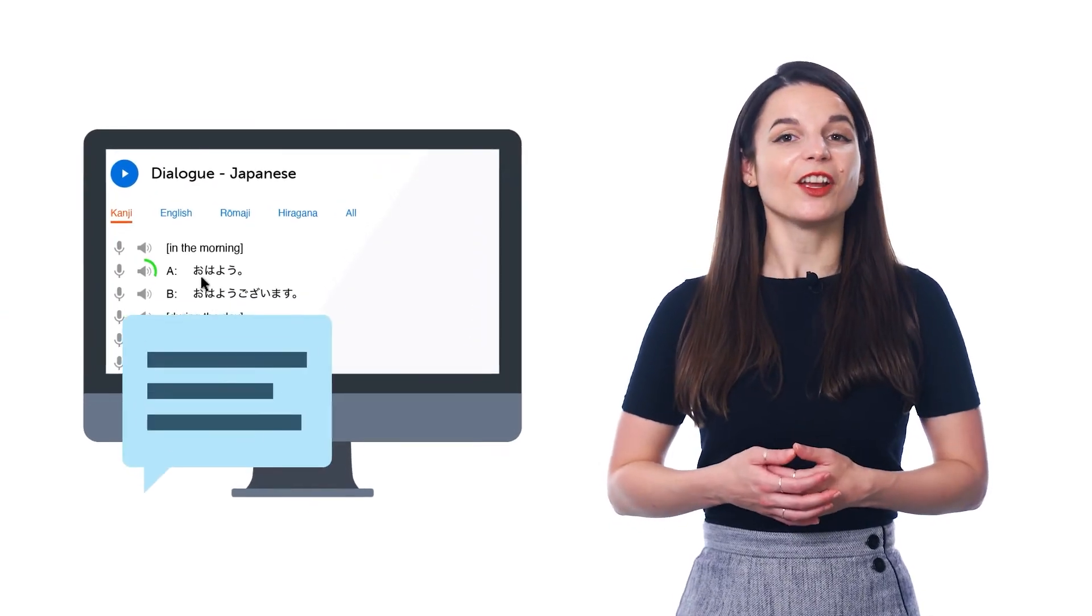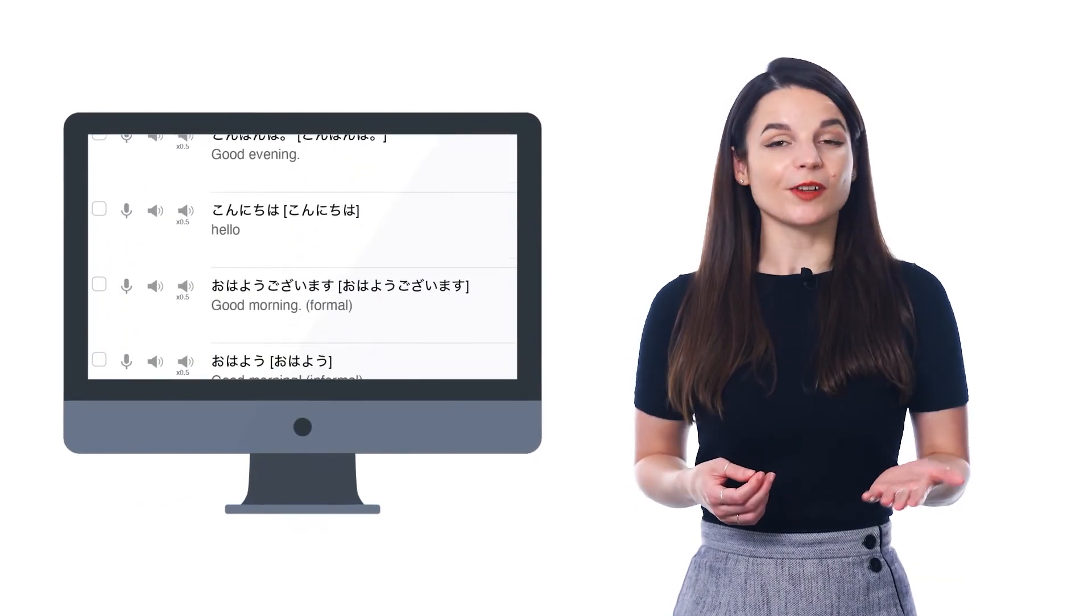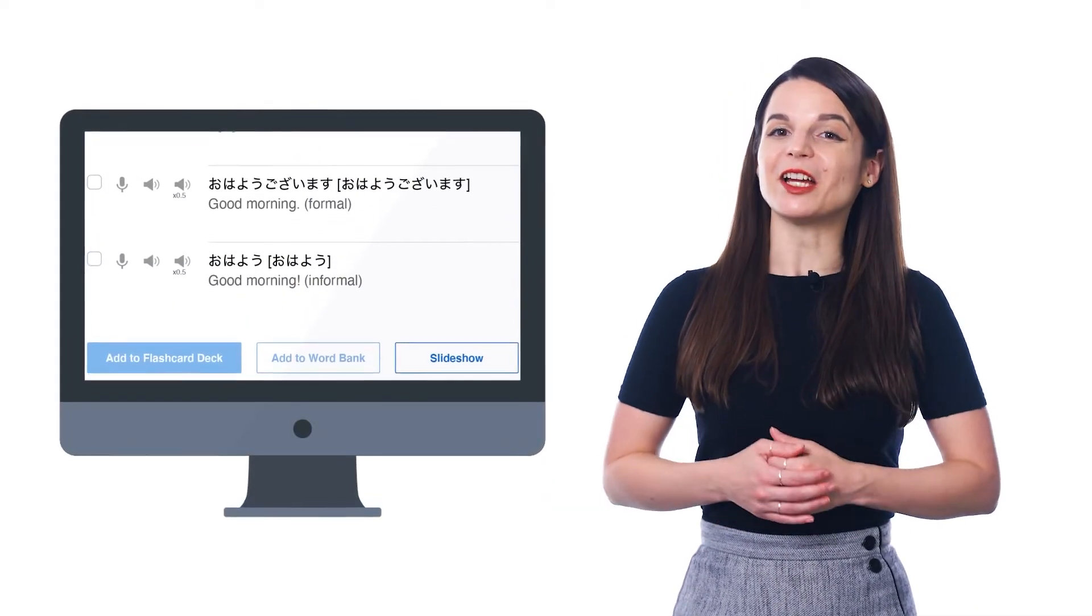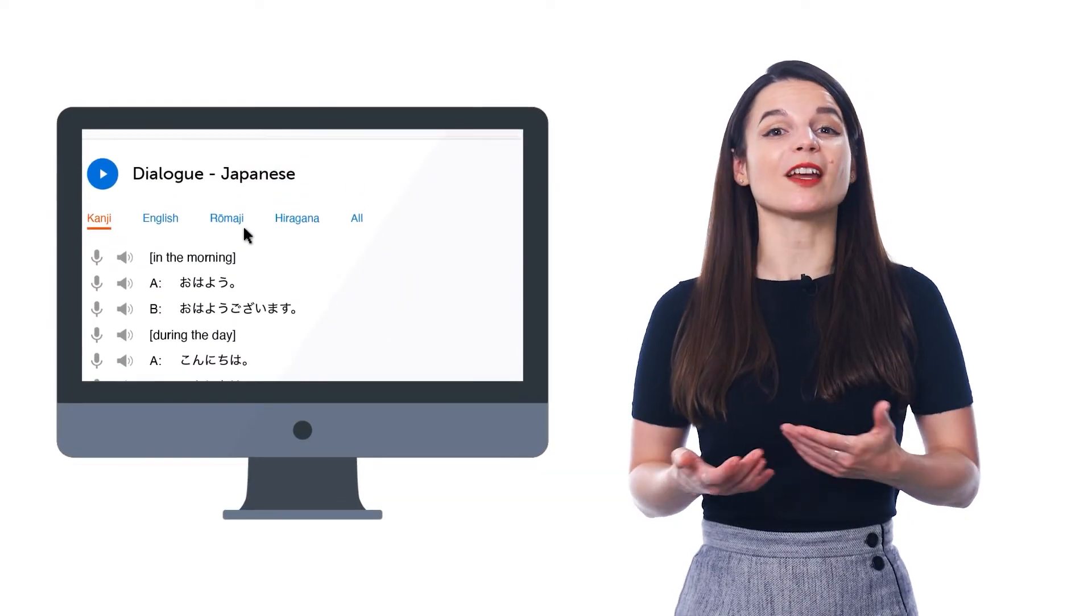As you listen to the conversation, read along line-by-line. And if you don't know a word, click on the translations. They're right there in the line-by-line dialogue. You can even read with the romanized script to help you sound out the words.